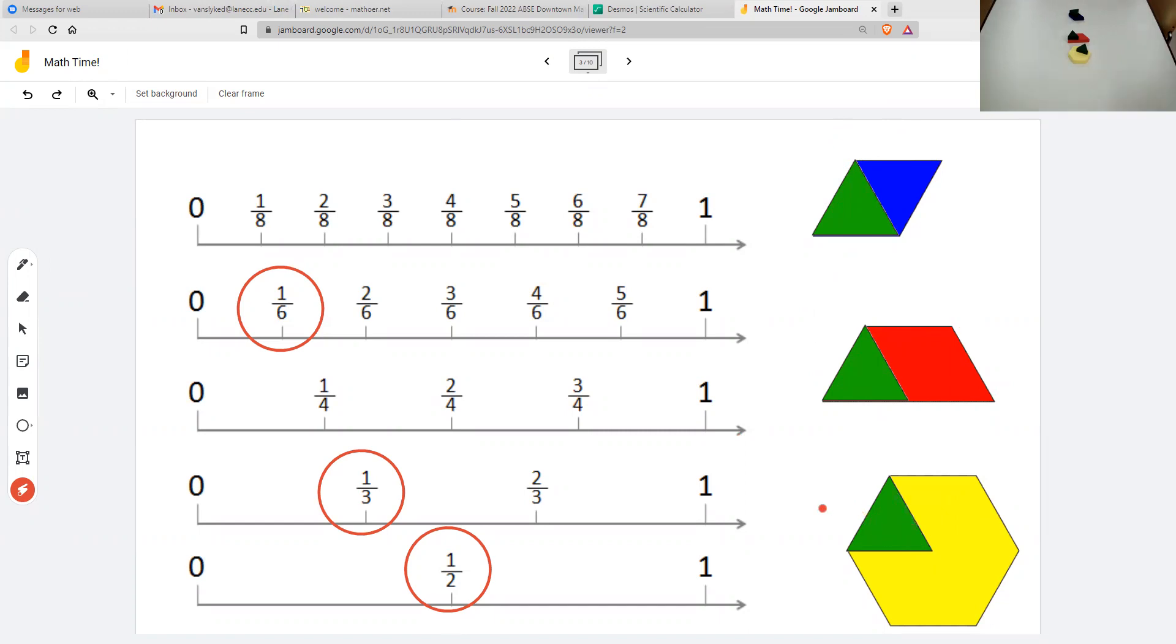So playing with these blocks, one half looks like it's green, one third looks like it's green, one sixth looks like it's green. Now it looks like they are the same. They're all green. It's not true anymore that one half, one third, and one sixth are different sizes. They're all the green triangle block. So which is right? Is it true that a half is bigger than a third, and the third is bigger than a sixth? Or is it true that sometimes they can all be the same?